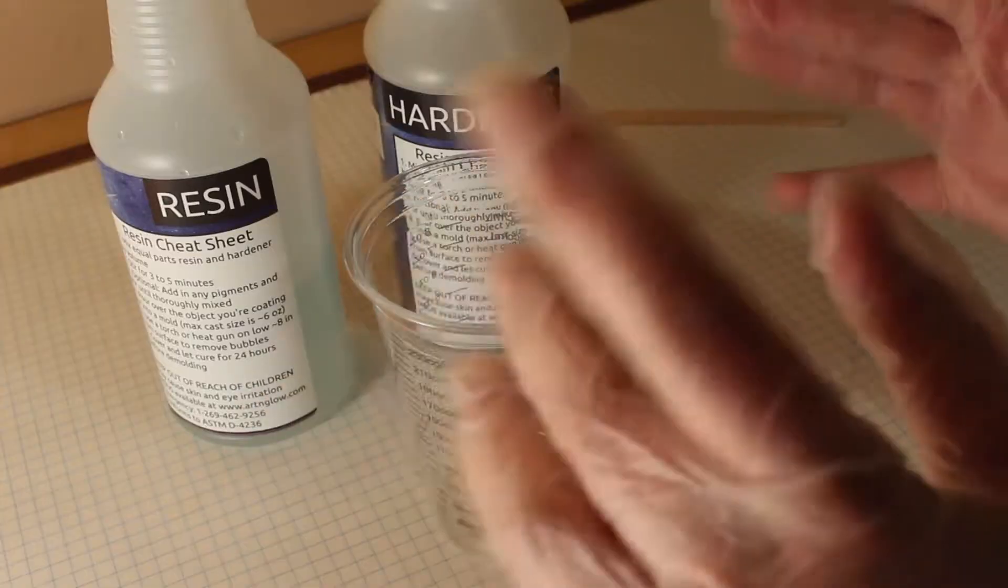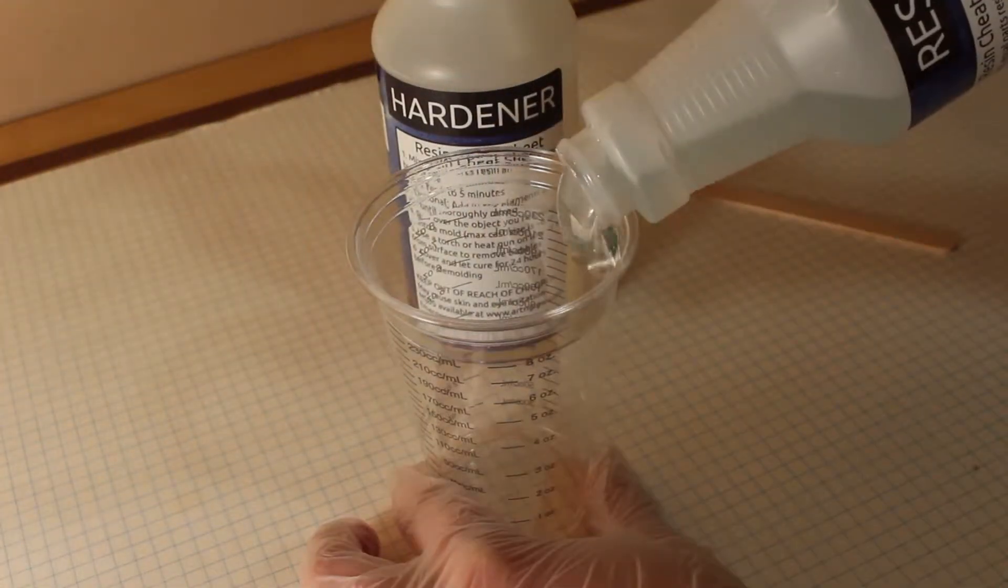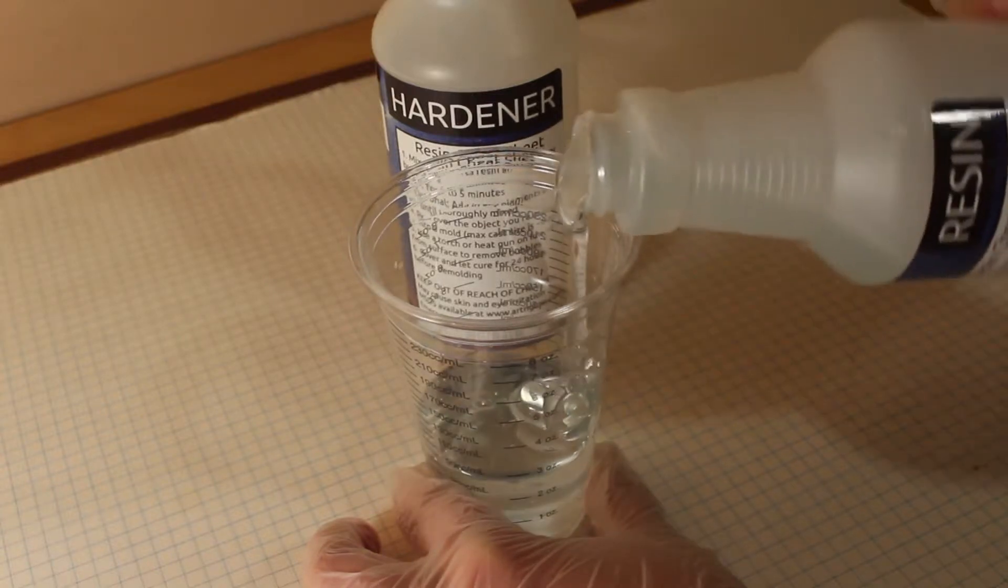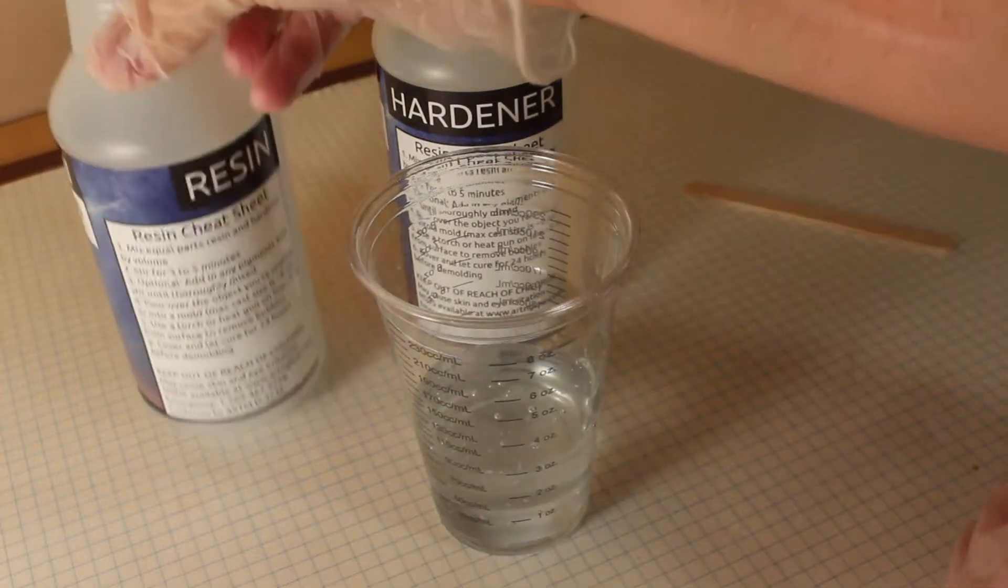To start, remember to always wear gloves to protect your skin. Mix equal parts of resin and hardener for five minutes until the streaks disappear. I find that mixing it slowly creates less air bubbles.